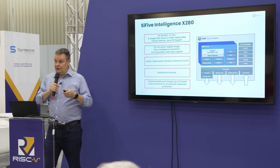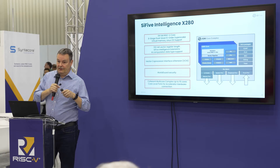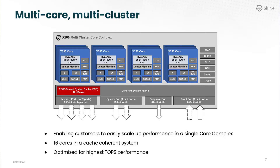For the first time on a multi-core vector-based system, we've introduced WorldGuard security. We've also maximized TOPS performance by enabling systems to be built up to 16 cores in a multi-core, multi-cluster system — also new in the release going out this week. This enables far more efficient performance scaling in a single core complex to meet the needs of targeted applications.